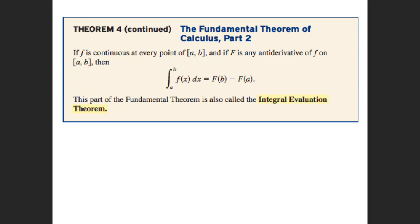If f is continuous at every point on [a, b], and F is an antiderivative of f on [a, b], then the integral from a to b of f(x) dx is equal to F(b) minus F(a). This part of the Fundamental Theorem is called the Integral Evaluation Theorem.